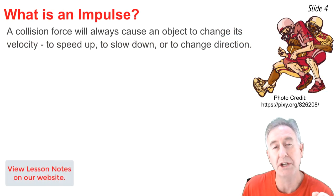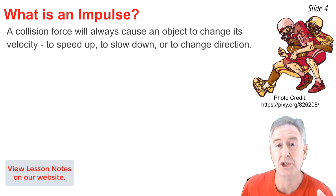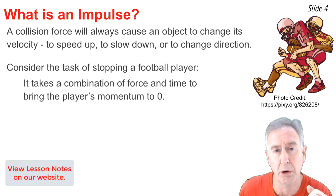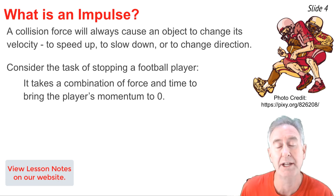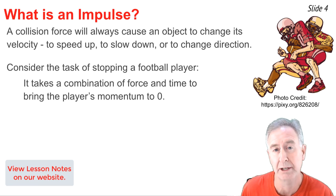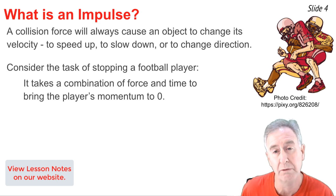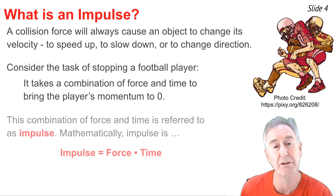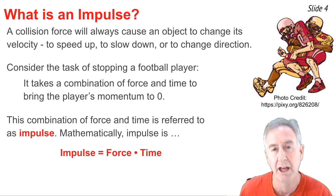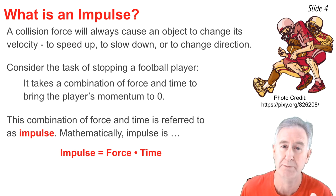A collision force will always cause an object to change its velocity — that is, to speed up, slow down, or even change its direction. Let's consider the task of bringing a football player to a stop. It would require a combination of force and time to stop that football player and bring its momentum to zero. It might be a big force for a short amount of time, or a weaker force for a longer amount of time. That combination of force and time is what we refer to as impulse — a force acting on an object for some amount of time in order to change that object's momentum.